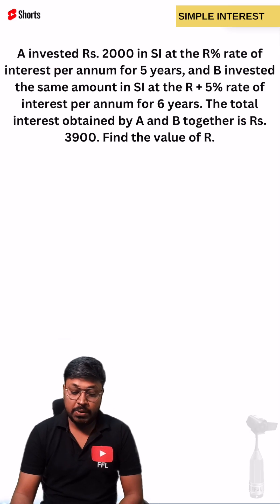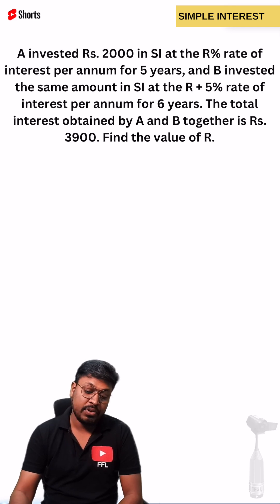A invested rupees 2000 in simple interest at the rate of R percentage per annum for 5 years. B invested the same amount, that means both persons are investing the same amount.